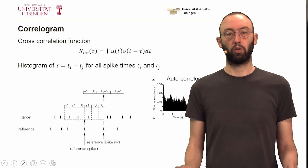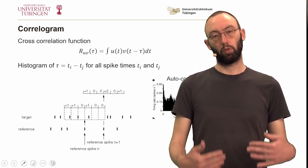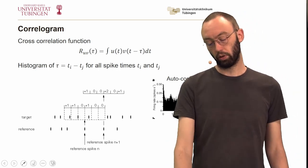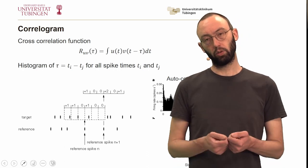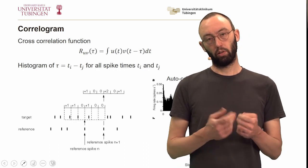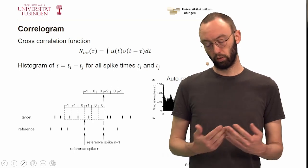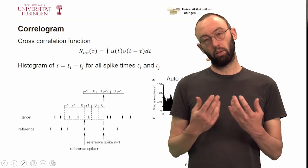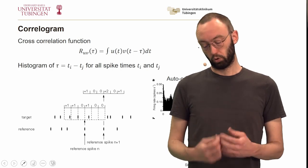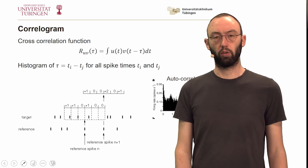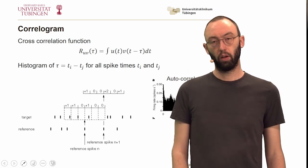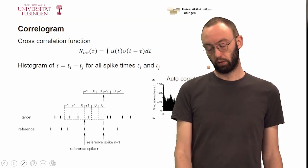If we do that with a spike train of a neuron with respect to itself, then we call that auto-correlogram. What we can see in the auto-correlogram is a lot of structure. For example, we can detect a refractory period if we do that at the proper time resolution. Here the time resolution is much too coarse for that because this is on the scale of seconds.